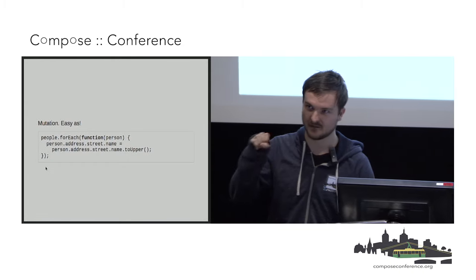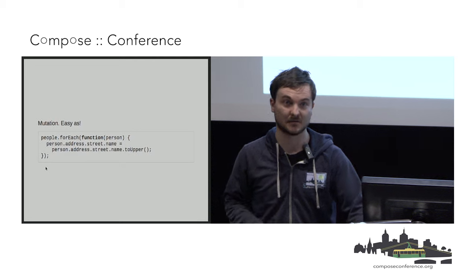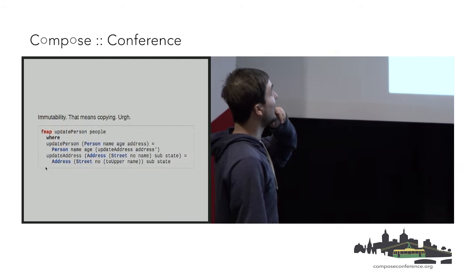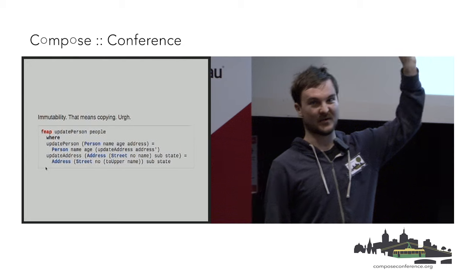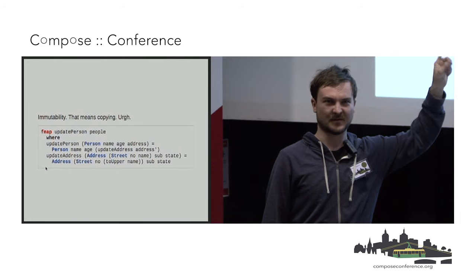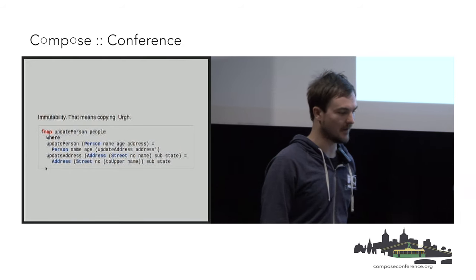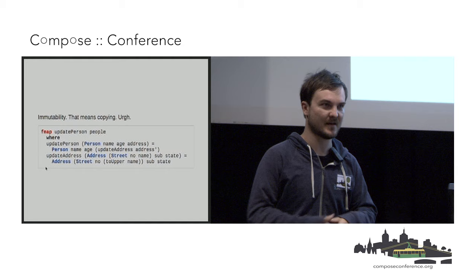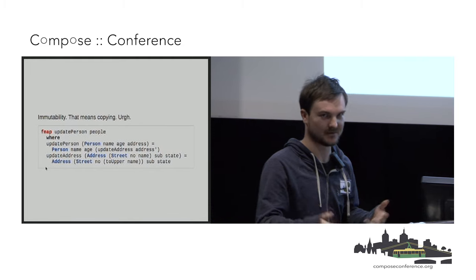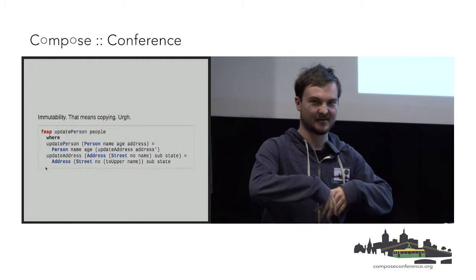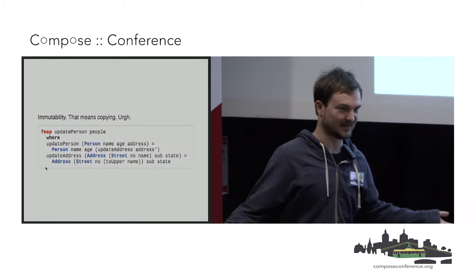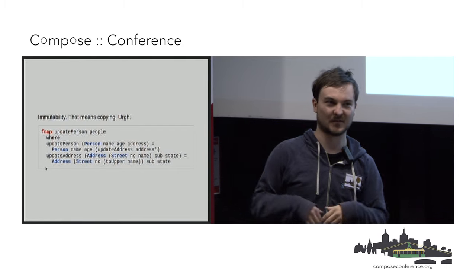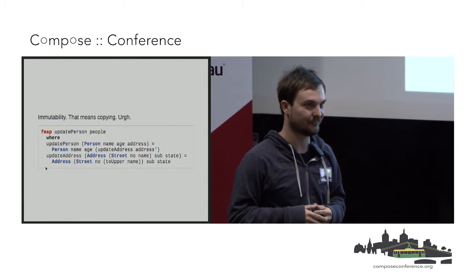Now if you were a beginner to Haskell and you were to write this, it would look something like this. You'd map through each person, extract out the fields from the person, run a function over one of the fields, extract out some more data, and then rebuild it all back up. So it's a lot of copying and it's pretty annoying to do.